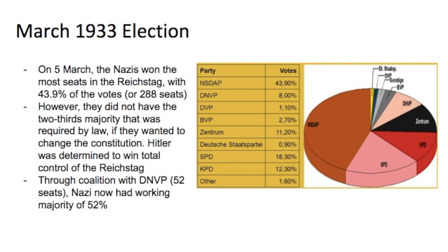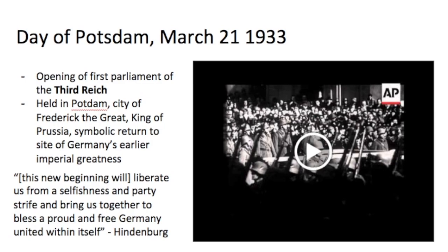In March with the new elections, the Nazis won the most seats — taking control of 43.9% of the votes. They did not have the required two-thirds majority to change the constitution and remove Hindenburg as president. But through a coalition with the DNVP, they grew to 52%, now having a majority — not two-thirds, but a majority.